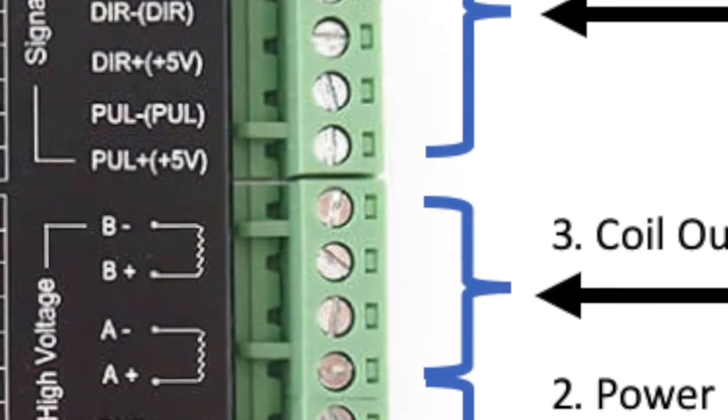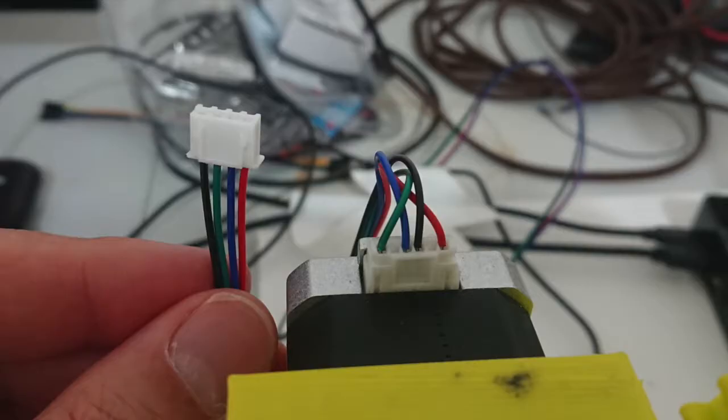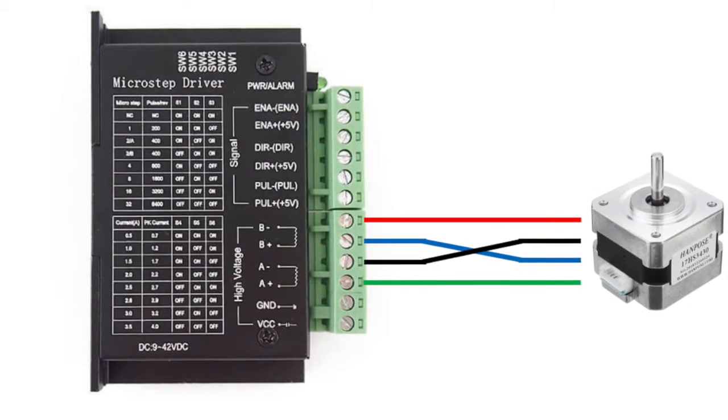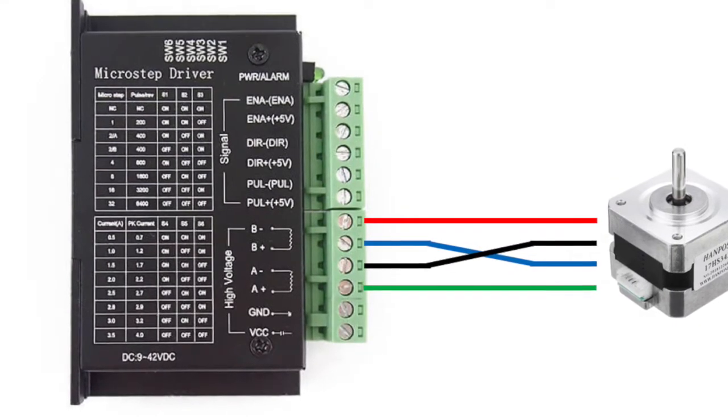The third part of the driver is for the coil windings in the stepper motor. Usually, the wires from the motor are ordered to be directly inserted into the driver. If that isn't clear, the first and third wires are a coil pair and the second and fourth wires are a coil pair.